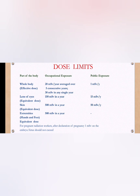For radiation professionals, the occupational exposure limit is 20 millisieverts per year, averaged over five consecutive years. In a single year, there should be no more than 50 millisieverts. For the public, the dose limit is 1 millisievert per year.